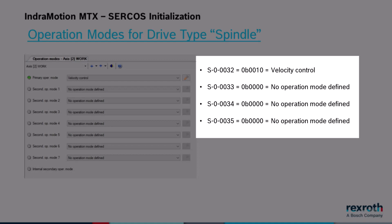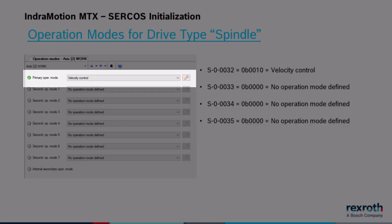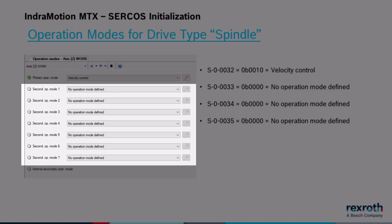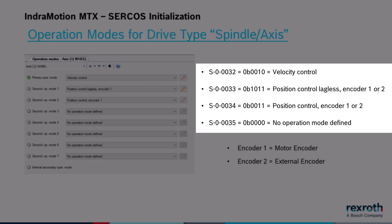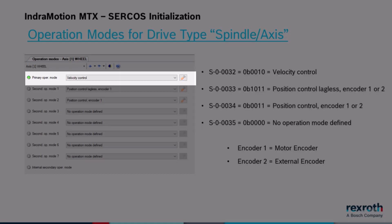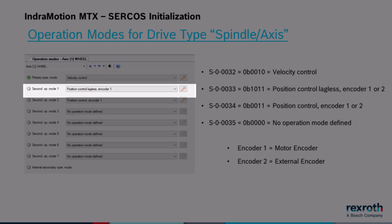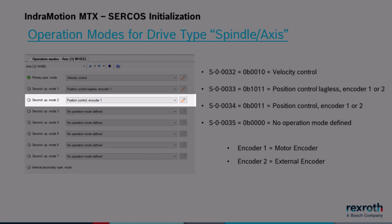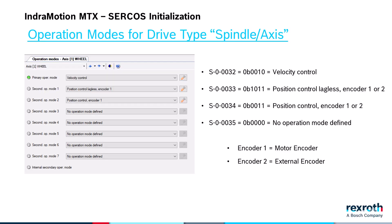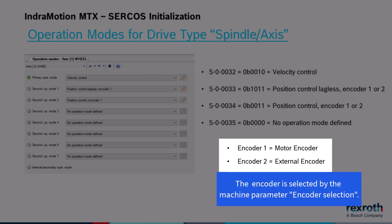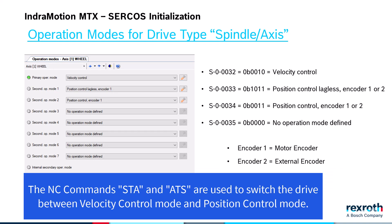For the drive type spindle, the control will automatically generate these values. For the primary operation mode parameter S32, it sets velocity control. It sets the remaining secondary operation mode parameters to no operation mode defined. For the drive type spindle/axis, for the primary operation mode parameter S32, it sets velocity control. For secondary operation mode 1 parameter S33, it sets position control, lagless, encoder 1 or 2. For secondary operation mode 2 parameter S34, it sets position control, encoder 1 or 2. Encoder 1 refers to the motor encoder; encoder 2 refers to the external encoder. The encoder is selected by the machine parameter for encoder selection. The NC commands STA and ATS are used to switch the drive between velocity control mode and position control mode.